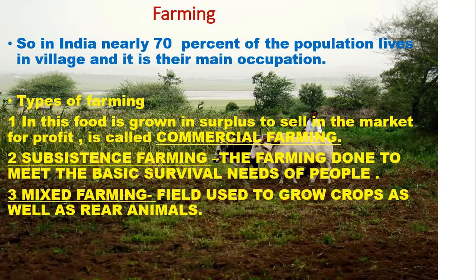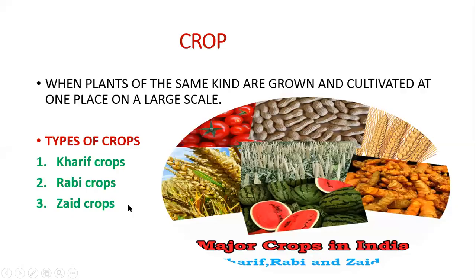In mixed farming, the field is used to grow crops as well as rear animals at one place on a large scale. When crops are grown at one place on a large scale, it is called a crop.